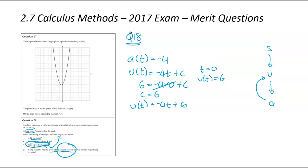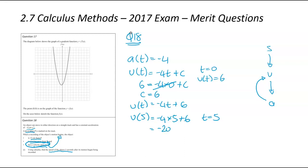The full velocity equation is v equals negative 4t plus 6. Substituting t equals 5: velocity equals negative 4 times 5 plus 6, that's negative 20 plus 6, which equals negative 14 metres per second. The negative velocity makes sense because the object can move in either direction — it's probably moving backwards rather than forwards. That wraps up all the merit questions from the 2017 exam. Hopefully you found the video useful — keep practising.